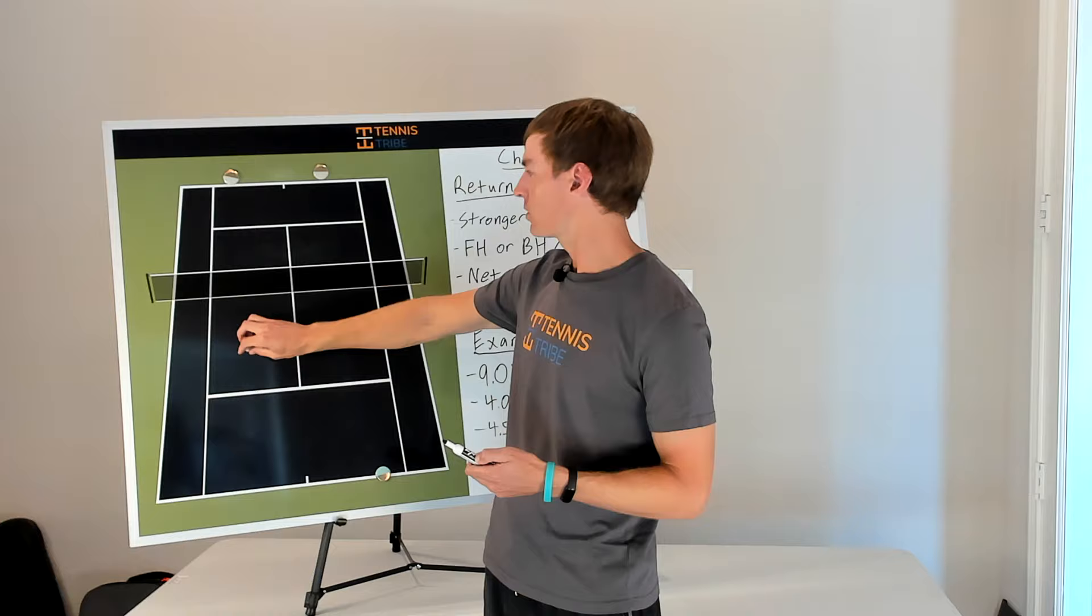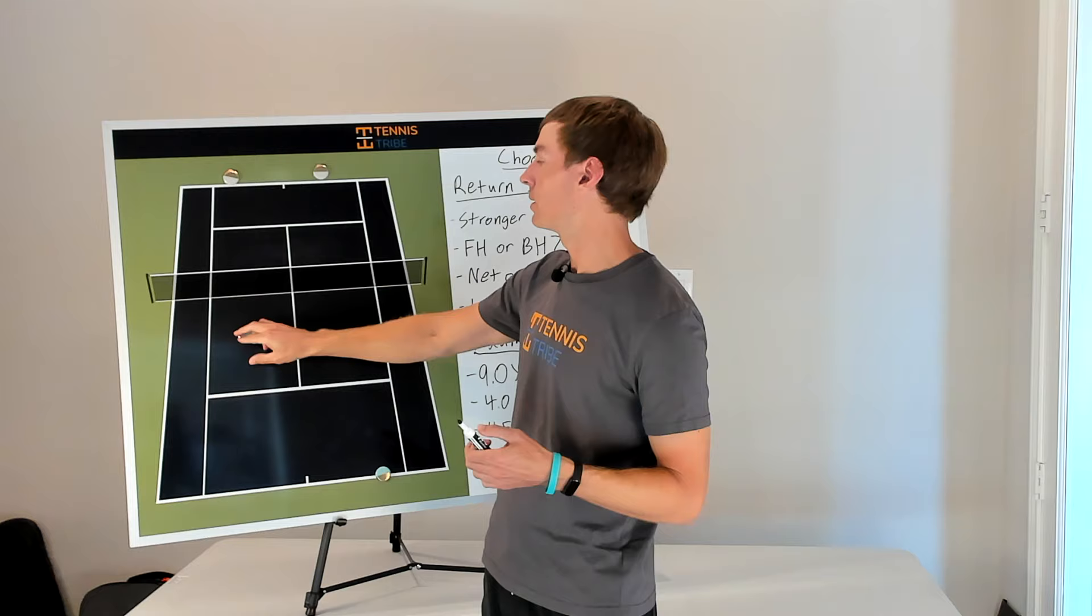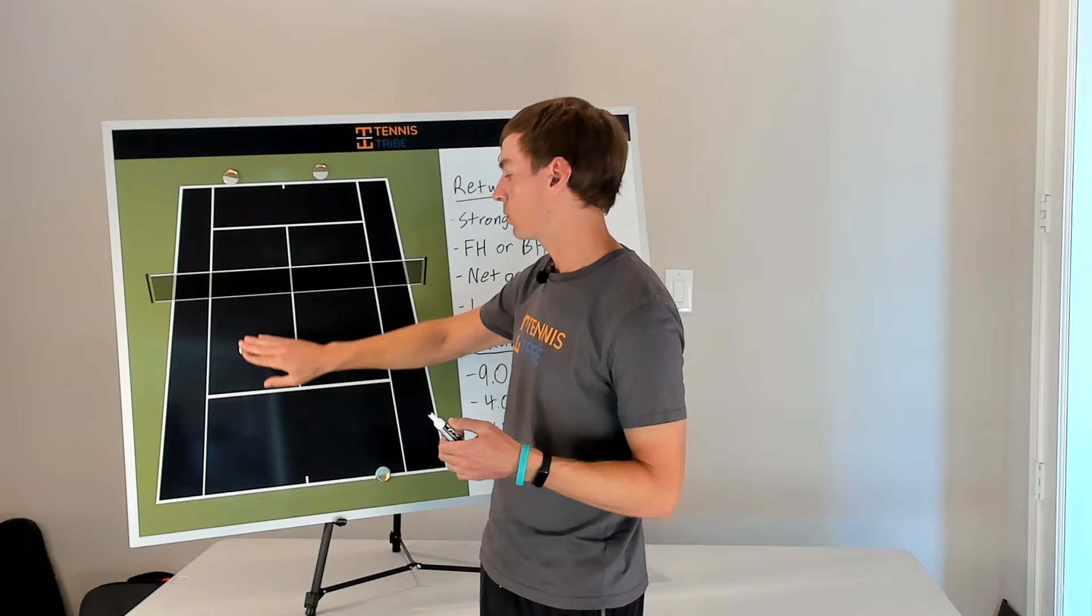So in this scenario, the stronger player obviously returning from the deuce court. They won the two matches that they did play, one of them in a third set, another one in straights. And this player was able to help out from the net because the stronger player back here is really hitting with good depth, working the ball around, and setting up the weaker player at the net where they're more comfortable.